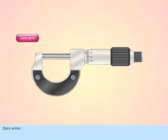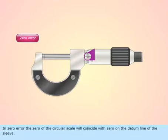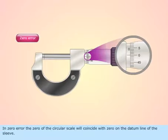Zero error. In zero error, the zero of the circular scale will coincide with zero on the datum line of the sleeve.